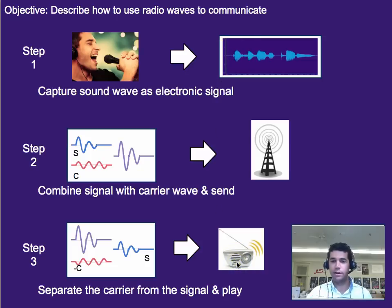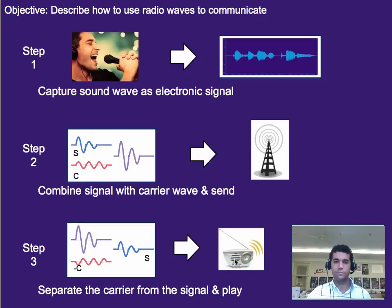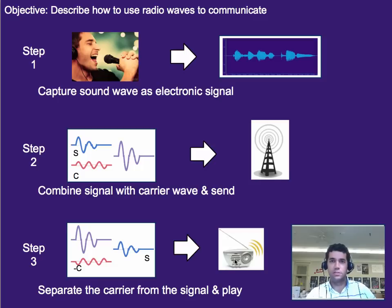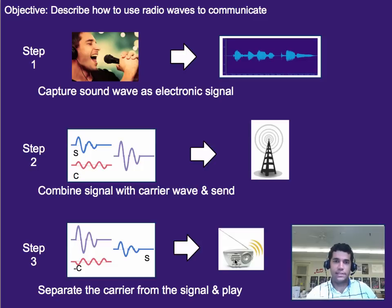That signal is then played out via a speaker, or if it's a text message, it's shown on a screen. That's the basics of how we use radio waves to communicate — and this applies to Wi-Fi, text messages, cell phones, cordless phones, radio, and really any form of modern communication.